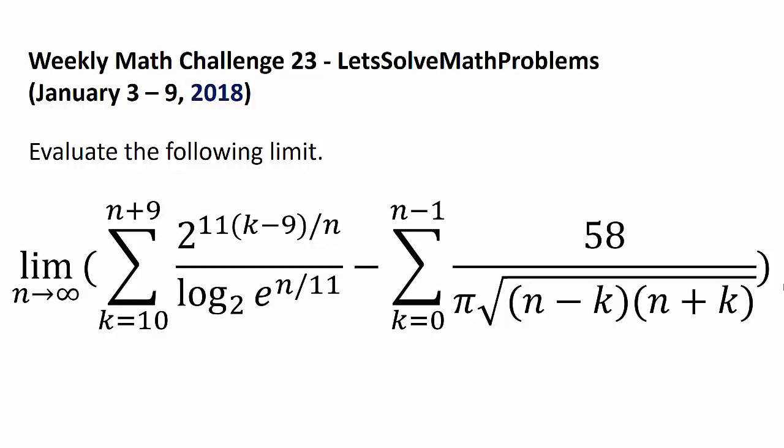minus the sum from k equals 0 to n minus 1 of 58 over the quantity pi times square root of n minus k times n plus k. Happy New Year once again!